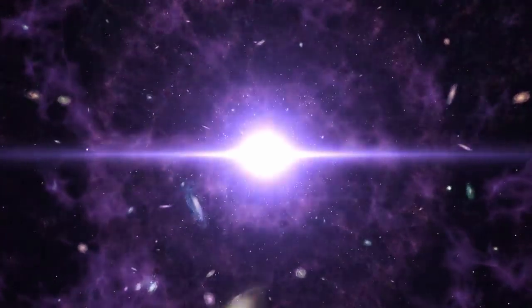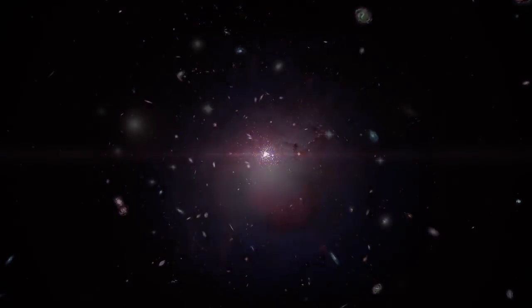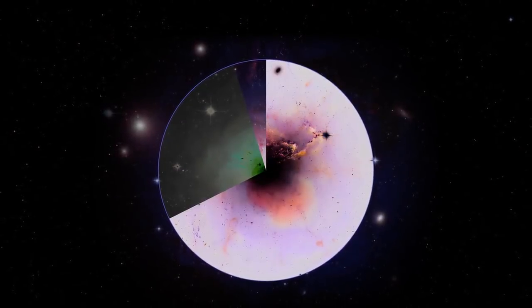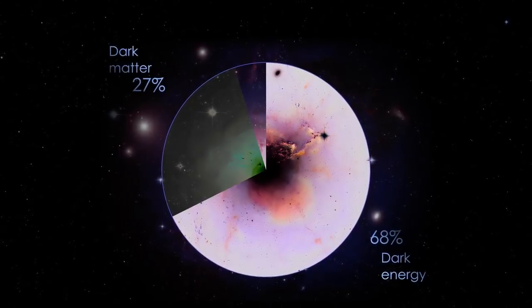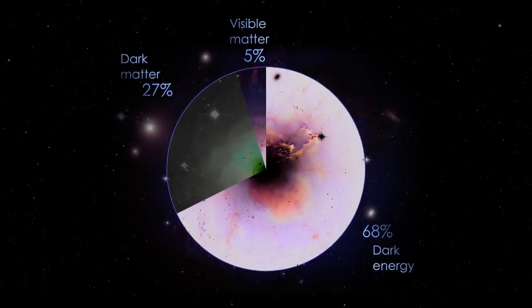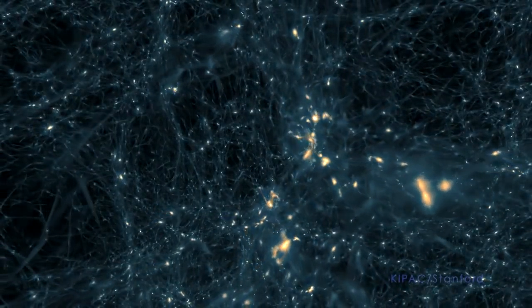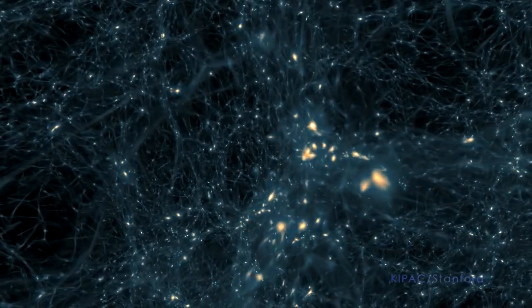The universe, for all we have learned about it, we have still only scratched the surface. Everything that we can see around us makes up less than five percent of what's actually out there. All the rest is called dark matter and dark energy. What are they? We still don't know, even though they determine the fate of the universe.